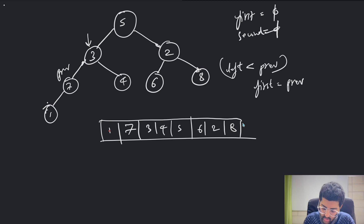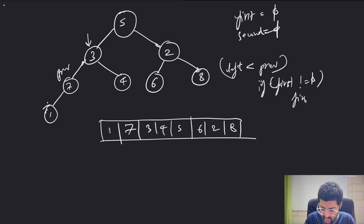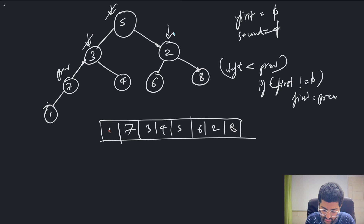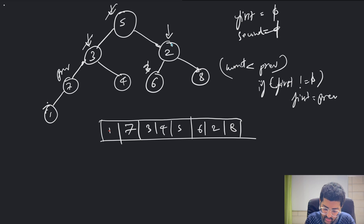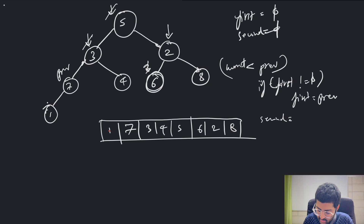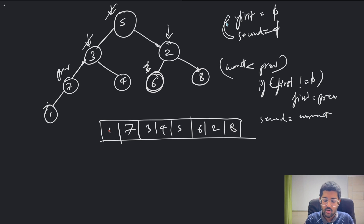If first is not equal to null, meaning first has already been found, we keep going. When we reach the second violation — where the current node is less than the previous node again — we set second equal to the current node. Previous in that case is the sixth node.